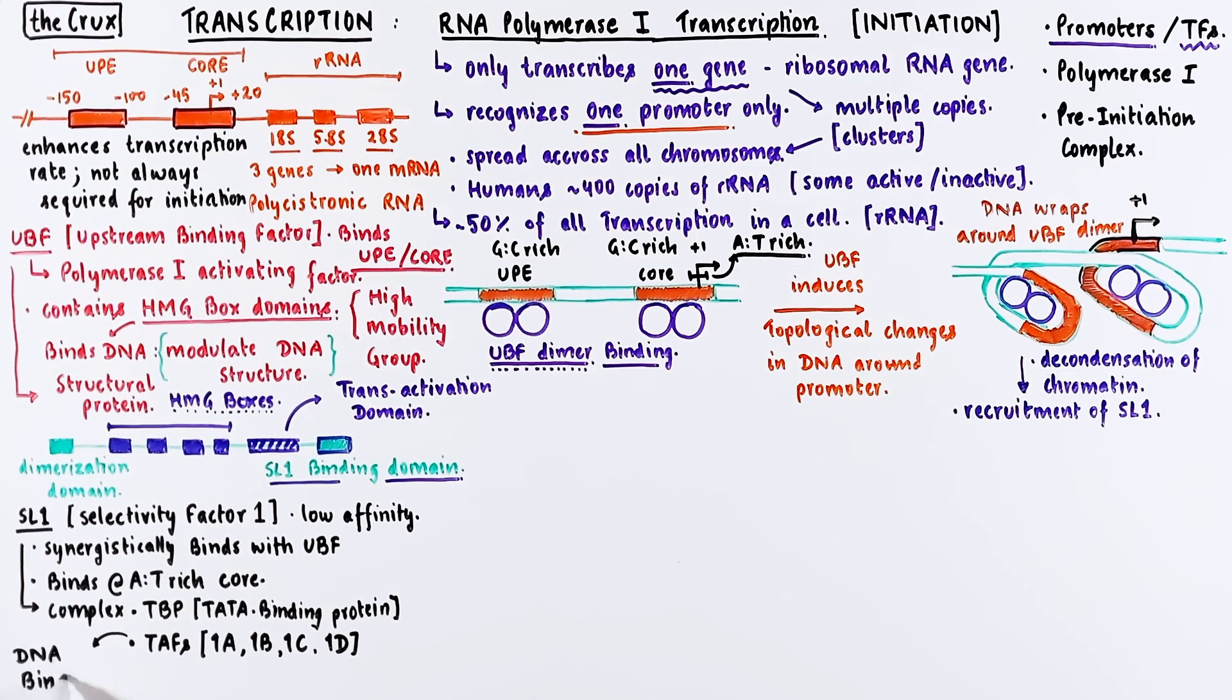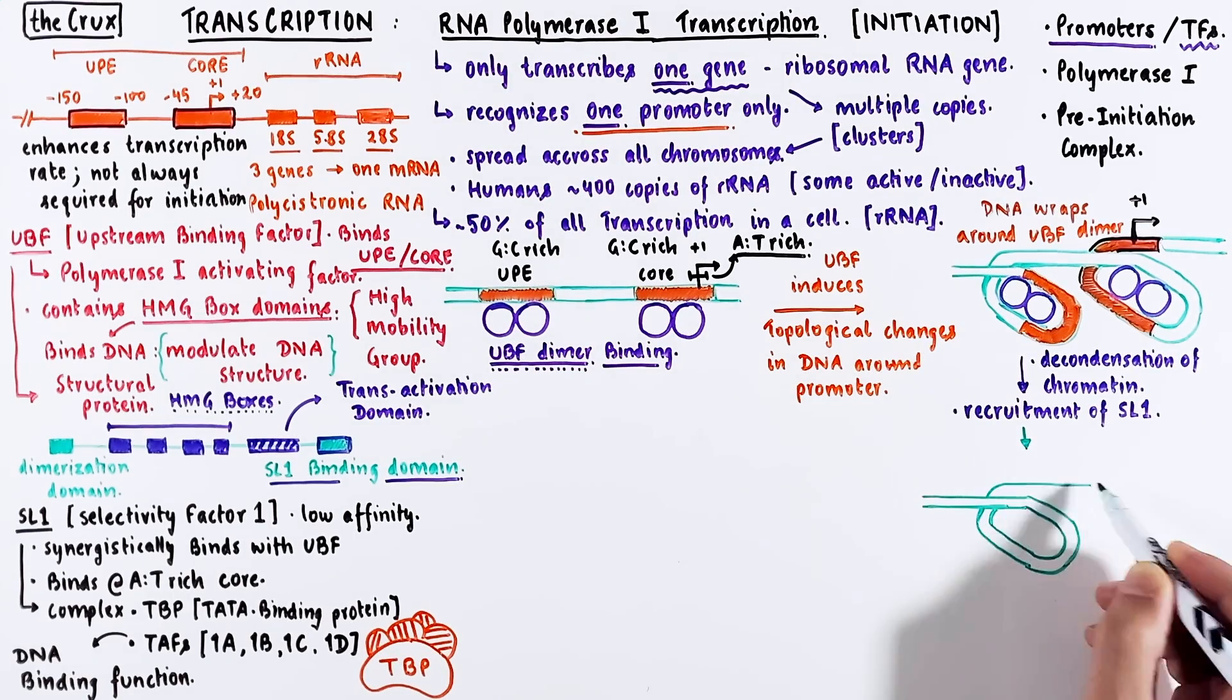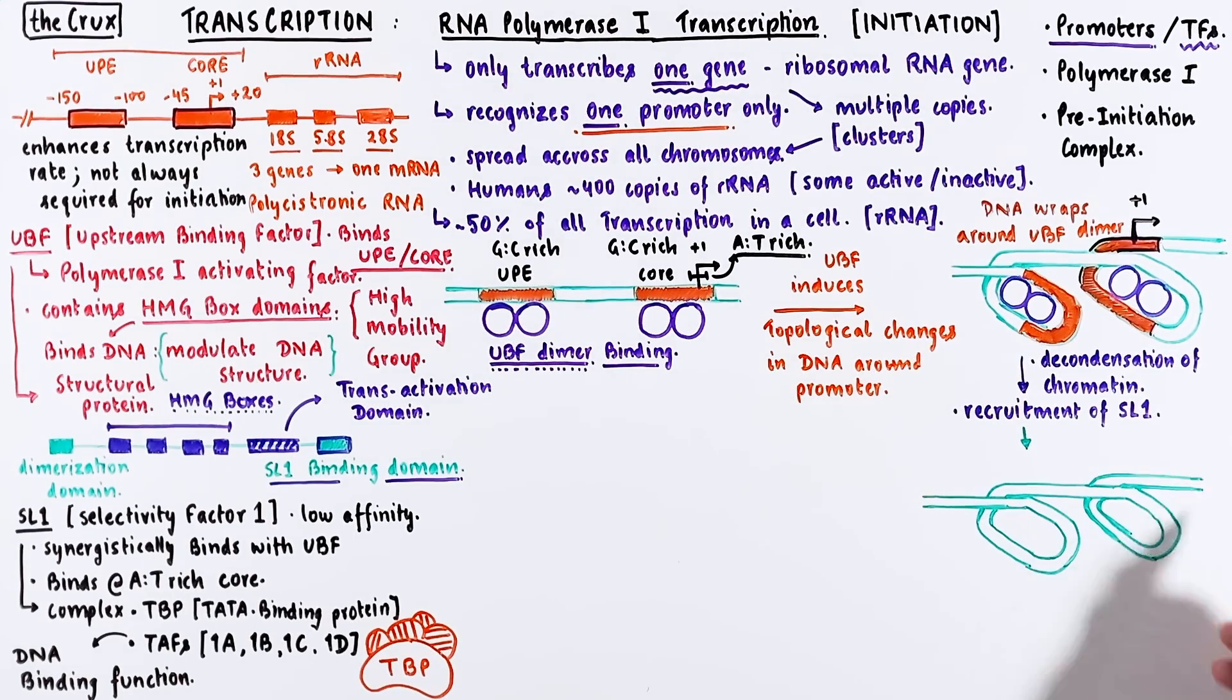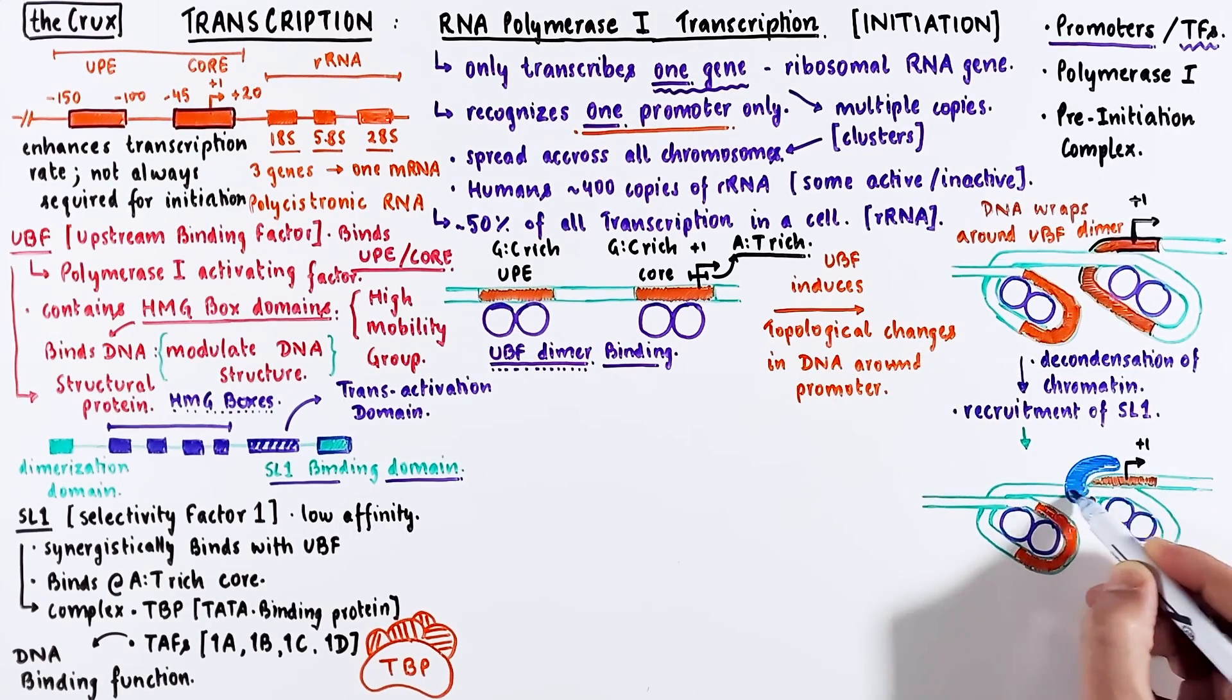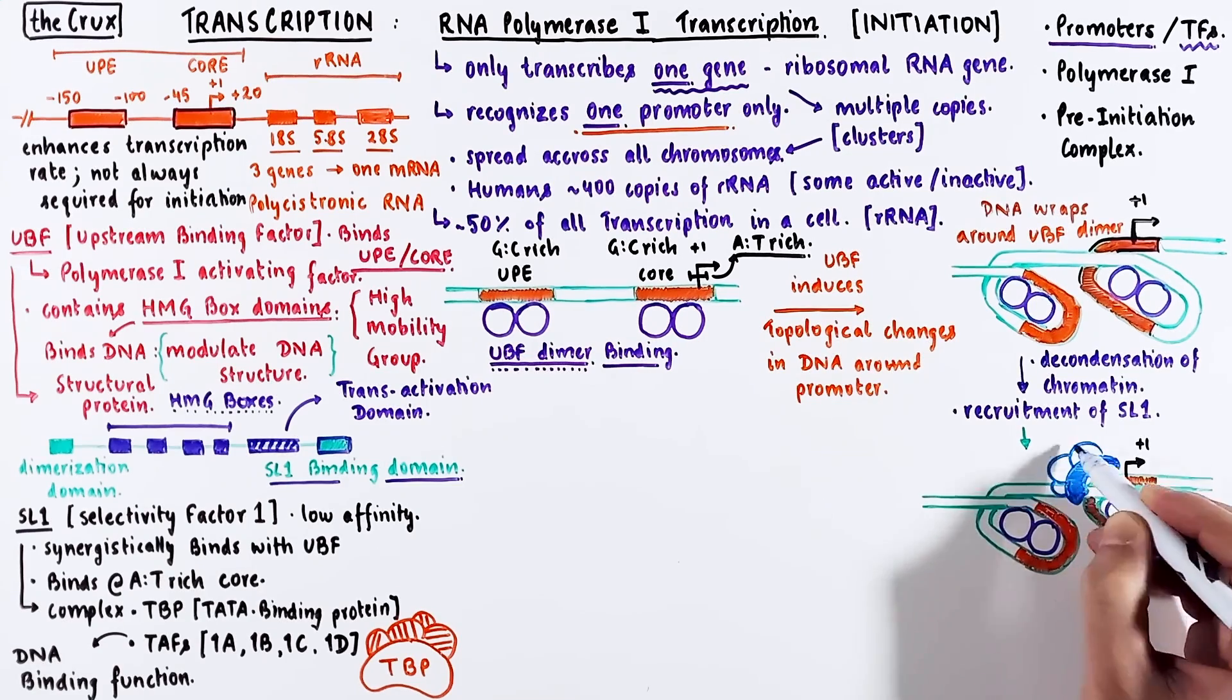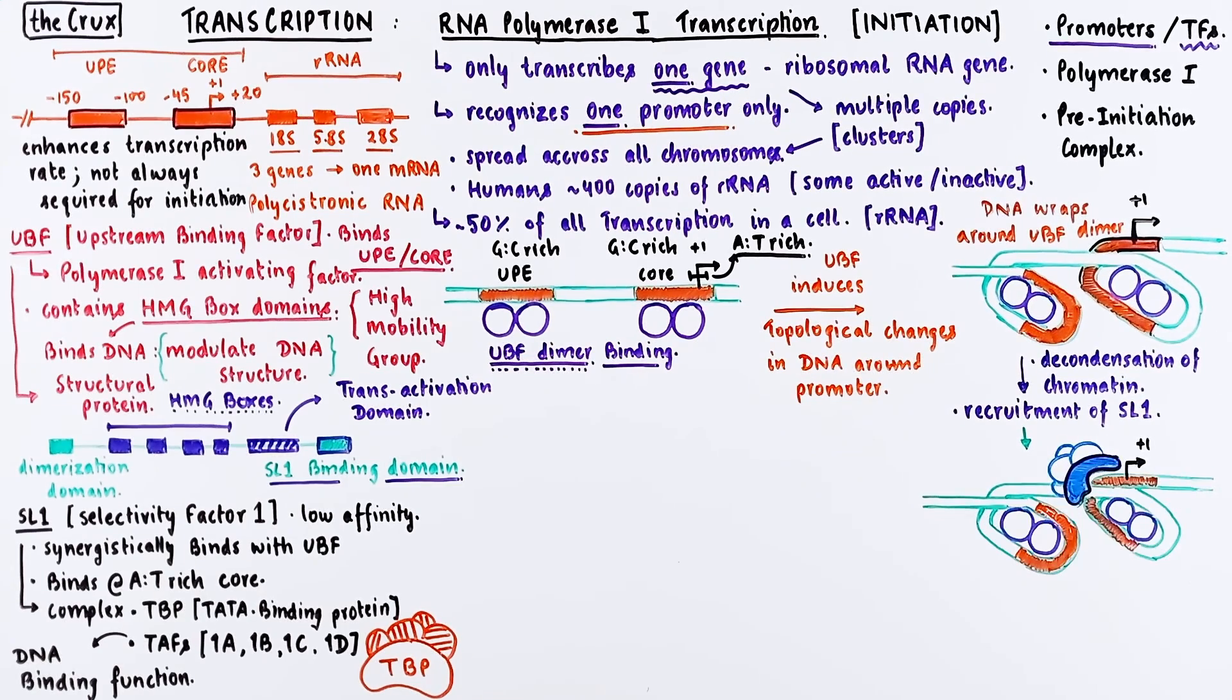So visually, if we were to represent SL1, it would look something like this. Now we can complete our picture of the promoter and UBF when the SL1 protein binds. Notice that the SL1 binds near the AT-rich region in the core promoter. It specifically has higher affinity for the core promoter and not the UPE. This is why we said that the core promoter is an essential component in the transcription initiation, because it can recruit both of these transcription factors.